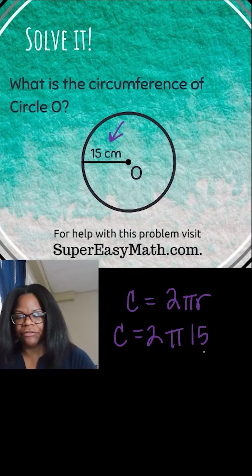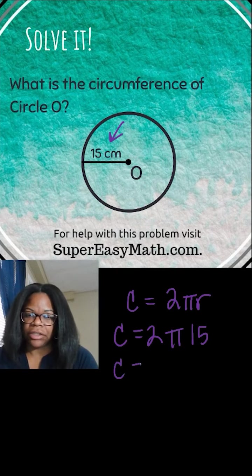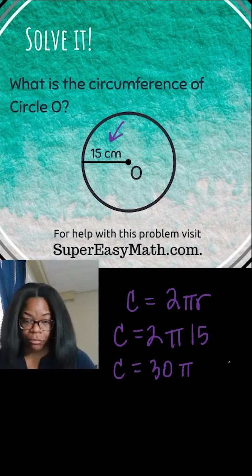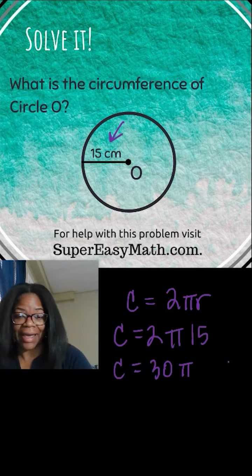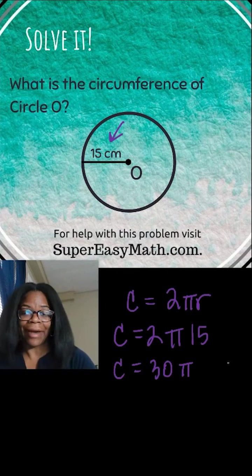2 times 15 is the only thing that I can actually work out at the moment, so that becomes 30. C equals 30, and I'm just going to write the pi. You can perfectly write down circumference equals 30 pi, and that is the most absolute and complete answer and it's correct.